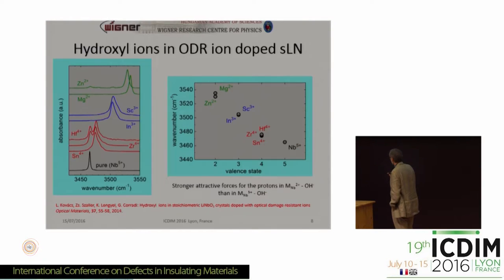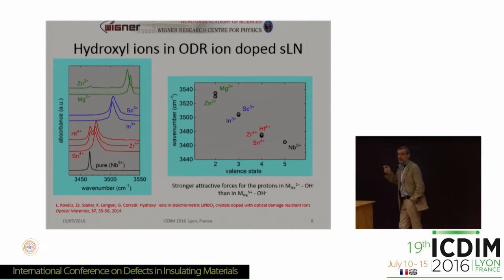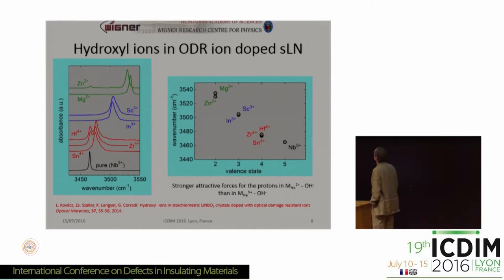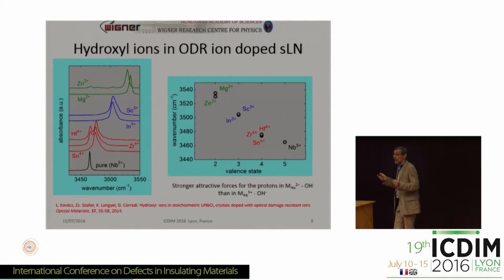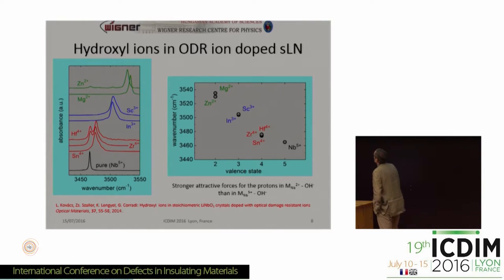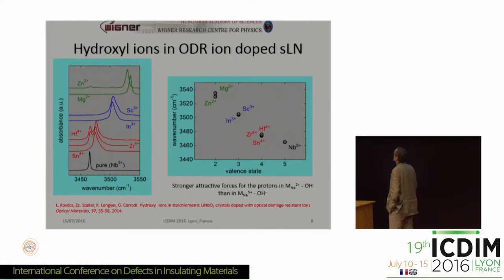So what we would like to know is whether in our stoichiometric rare earth doped crystal, where the rare earth ions are sitting. We monitored our crystals by infrared absorption spectroscopy, measuring the stretching vibration of the hydroxyl ion. The hydroxyl is a diatomic molecule; the proton is connected to the regular oxygen. In the case of divalent impurities like zinc and magnesium, above a critical threshold concentration, we have a new OH absorption band which is different from the pure crystal.